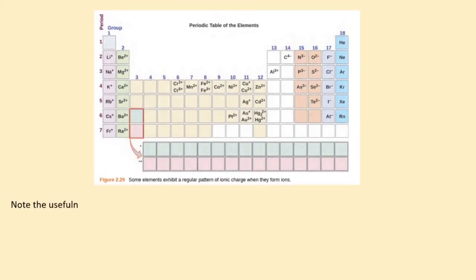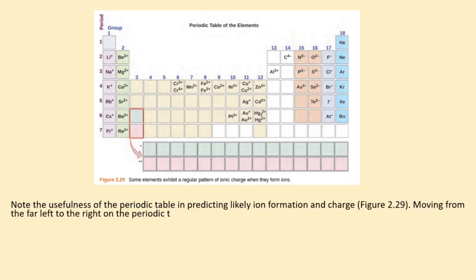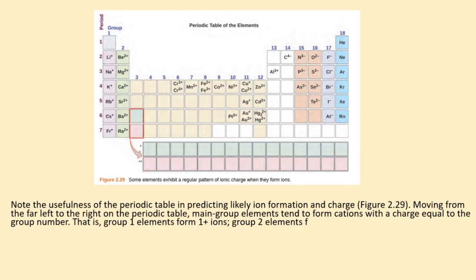Note the usefulness of the periodic table in predicting likely ion formation and charge, figure 2.29. Moving from the far left to the right on the periodic table, main group elements tend to form cations with a charge equal to the group number. That is, group 1 elements form 1+ ions, group 2 elements form 2+ ions, and so on.